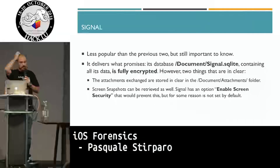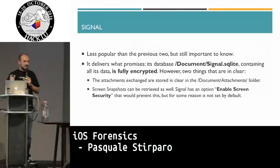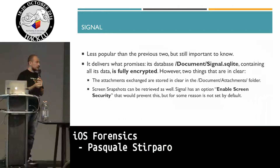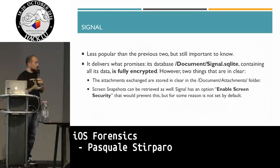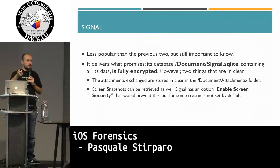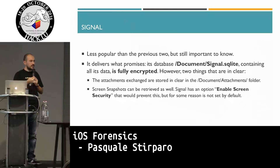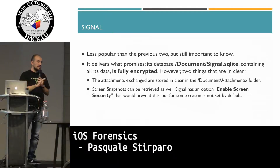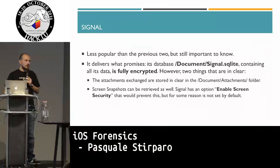Last but not least, Signal does what it promises — everything is encrypted. However, the screen is not cleared by default. You need to enable the option called 'Enable Screen Security' in settings, which is somewhat surprising given what Signal stands for. When you enable it, before releasing control of the application during a screen transition, Signal clears the screen. So when you retrieve the screenshot, you just get the Signal logo rather than your message content.